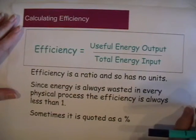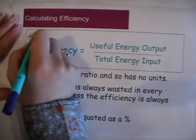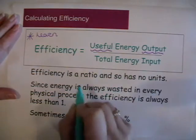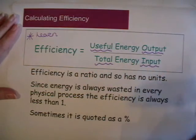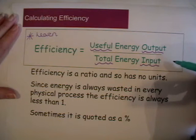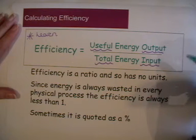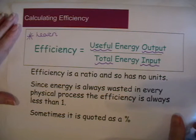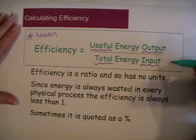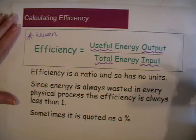Calculating efficiency — this is something you need to learn. Efficiency is useful energy output divided by total energy input: useful output over total input. It can also be calculated in terms of power, but you must make sure that if you have power in the top line, you have power in the bottom line, or energy in both lines. The key formula to learn is useful energy output over total energy input. Efficiency is a ratio and because it is a ratio it has no units — if you have joules in the top line and joules in the bottom line, the two units cancel so you are left with no units.